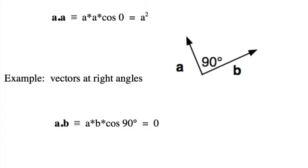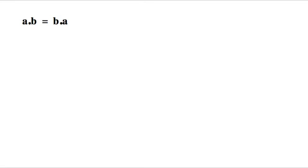We should also note that a dot b is equal to b dot a. This is not trivial. When we come to look at the vector product, we see that the order there is important.